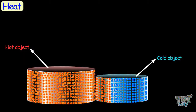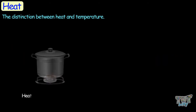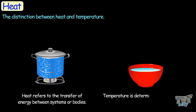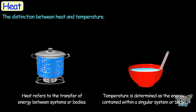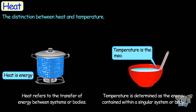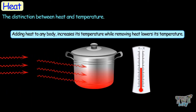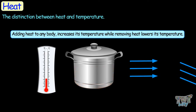Now let's learn the distinction between heat and temperature. Heat refers to the transfer of energy between systems or bodies, whereas temperature is determined by the energy contained within a singular system or body. In other words, heat is energy, while temperature is a measure of that energy. Adding heat to any body increases its temperature, while removing heat from any body lowers its temperature.